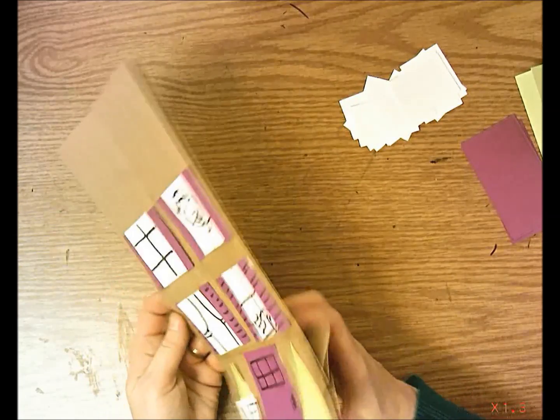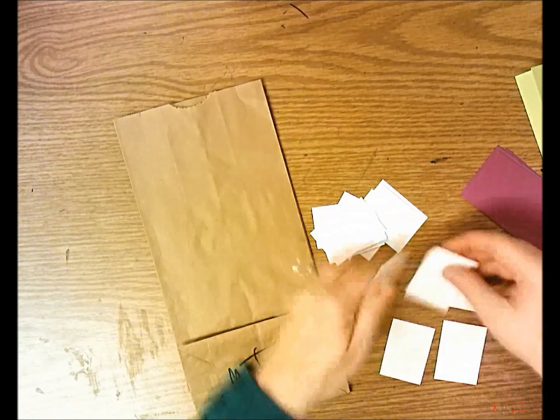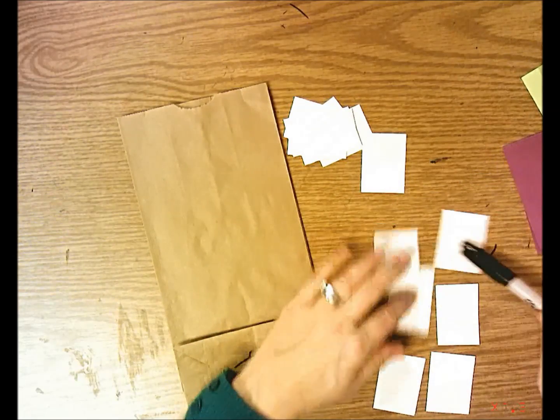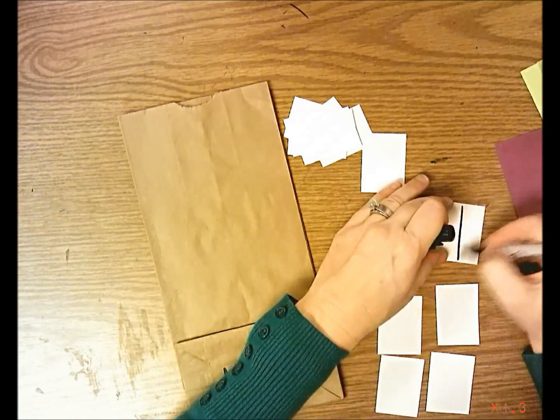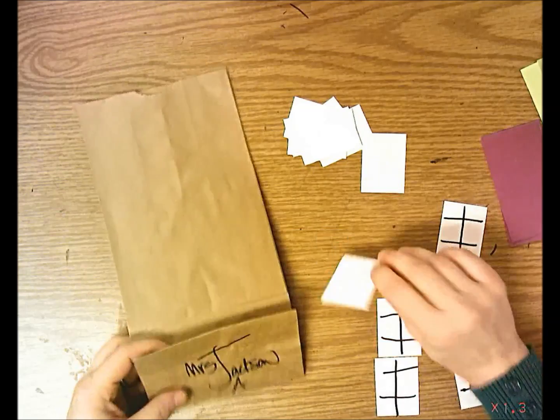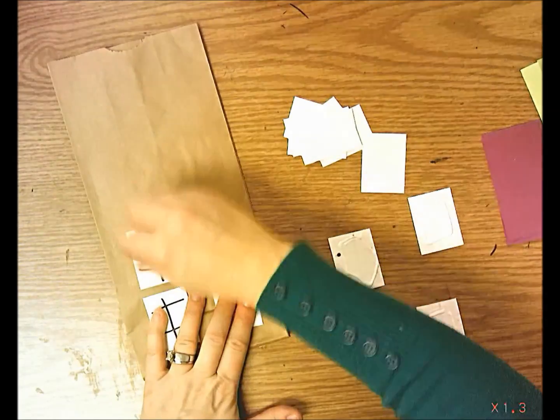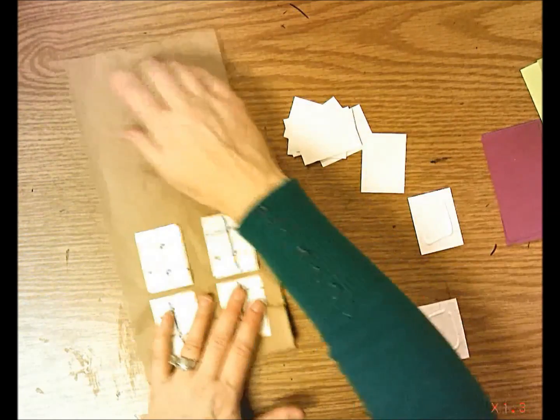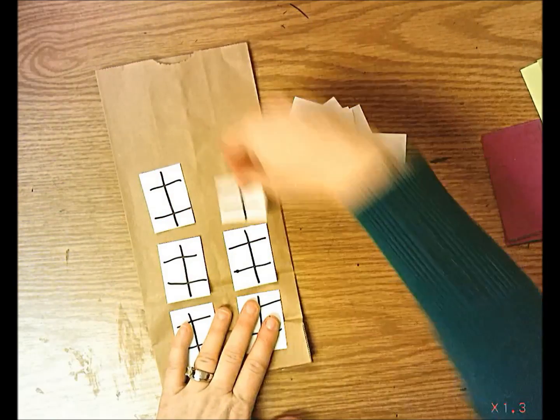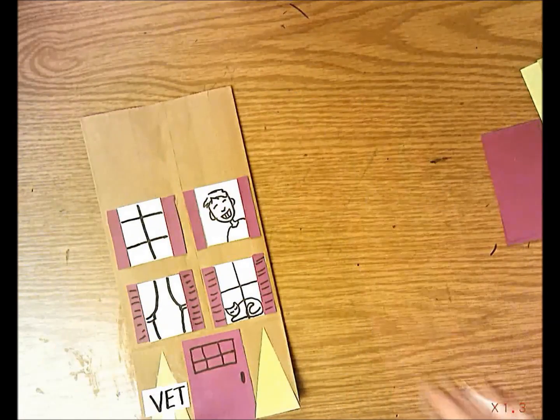Now I'm going to flip it over and do the back. In the back I'm just going to add some windows. I think I'll add six windows on the back since I don't have a door. Draw in the windows first or do the breaks. Flip your flap down so you can get to the bottom. Close together because the roof takes up a lot of the top. Always leave the top edge blank so we have room for the roof.